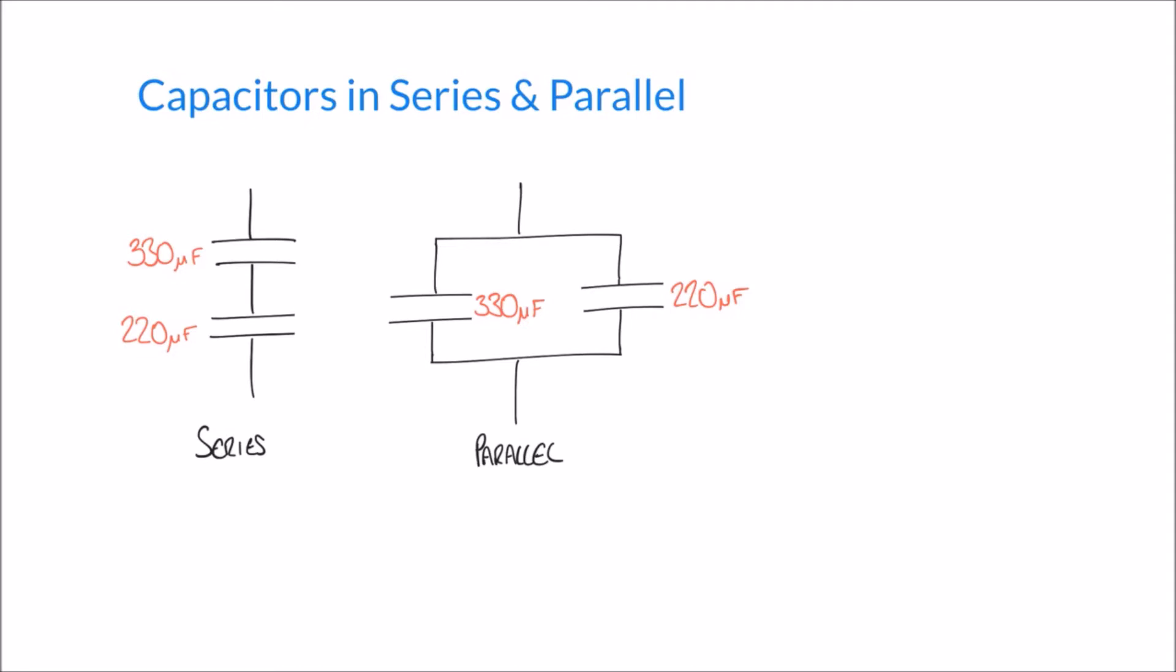When we looked at series and parallel resistors, we saw that in the case of series resistors, we could just add together the different resistors to get the total. So if we imagine that these were resistors here on the left-hand side, I would simply add R1 to R2 and so on to get the total.